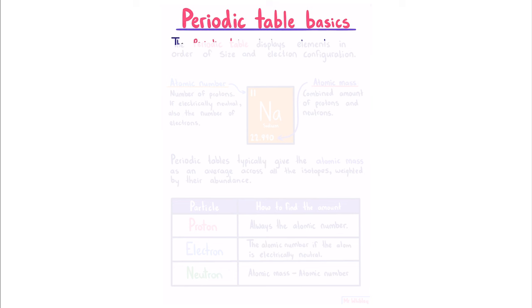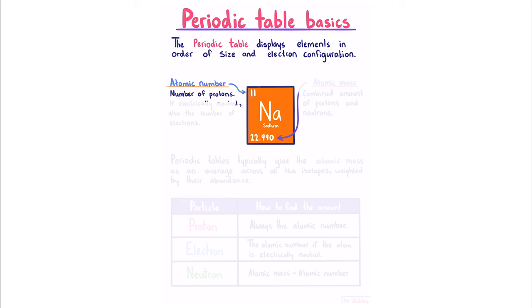Periodic table basics. The periodic table displays elements in order of size and electron configuration. From our element symbol, we have our atomic number, which is the number of protons, and if the atom is electrically neutral, it is also the number of electrons. And our atomic mass is the combined amount of protons and neutrons.